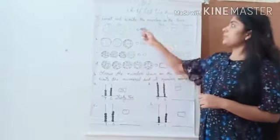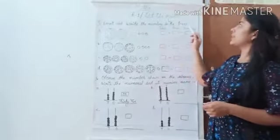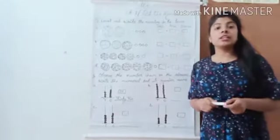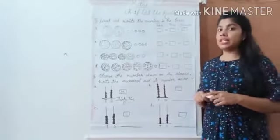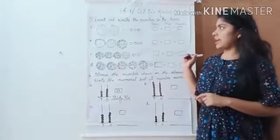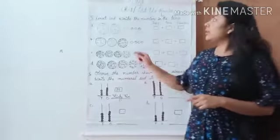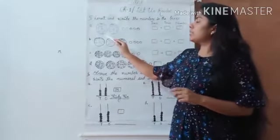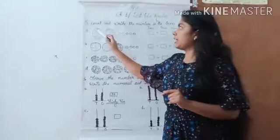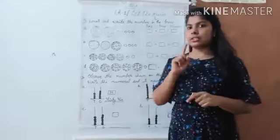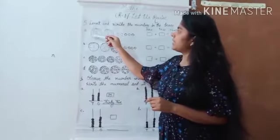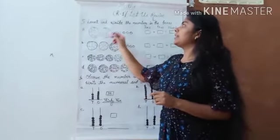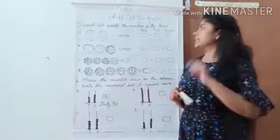Question number 5, count and write the numbers in the boxes. Students, you are familiar with 1's and 10's concept. Let us revise for the first time. Here, there are given a circle. In a circle, there are 10 balls. Let's count. 1, 2, 3, 4, 5, 6, 7, 8, 9 and 10.